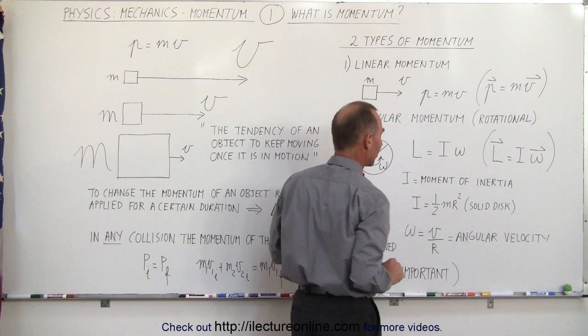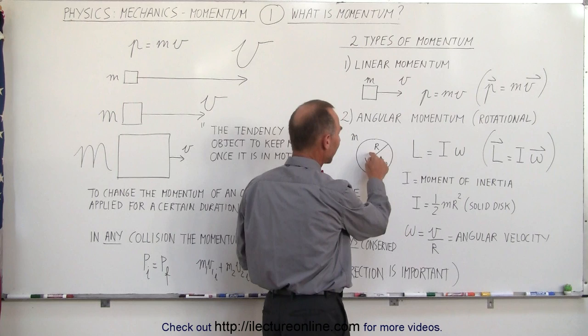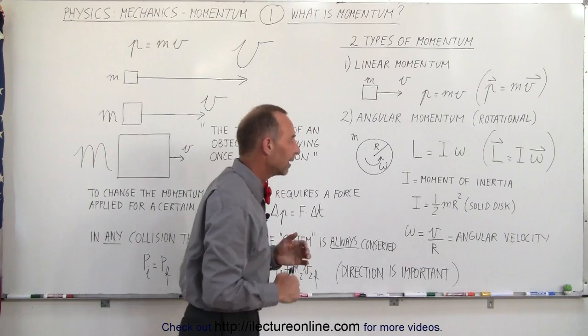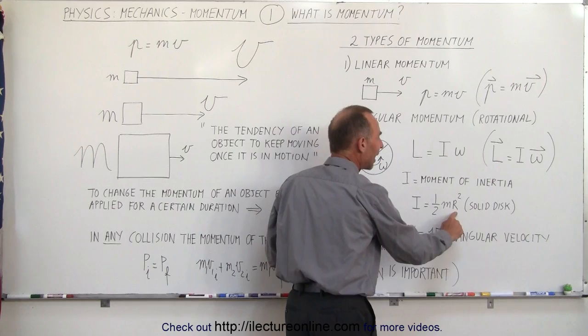Notice omega is v over r. If we take a point at the edge of the disk and measure the radius of the disk, then omega will simply be equal to the velocity divided by the radius, which is called the angular velocity. The moment of inertia of a solid disk is half the mass of the disk times the radius squared.